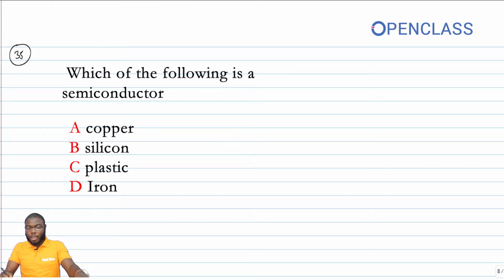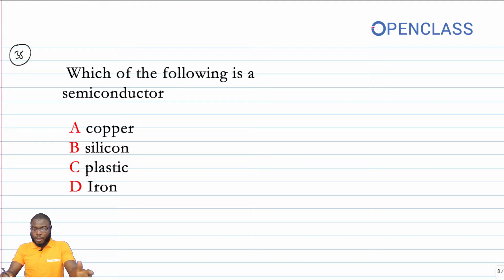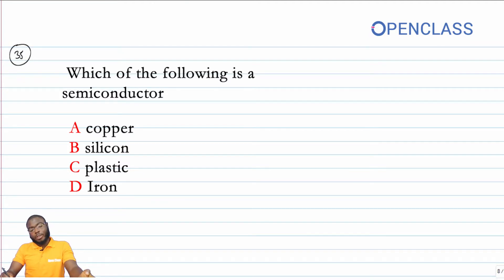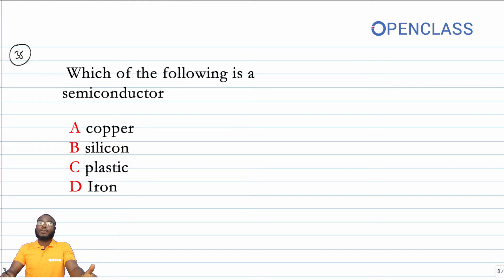Question 35 asks: which of the following is a semiconductor? The options are copper, silicon, plastic, and iron. To answer this, we need to know the three categories of materials: conductors, semiconductors, and insulators. Conductors offer very low resistance to the flow of current.